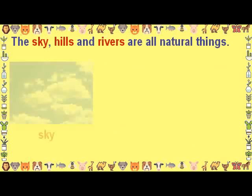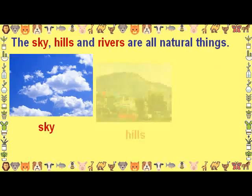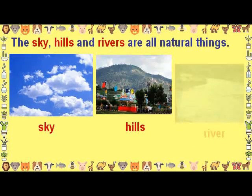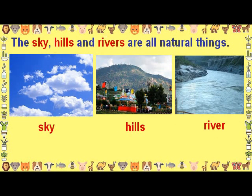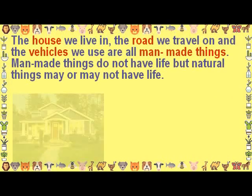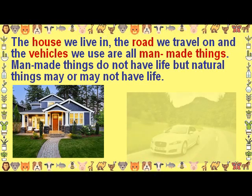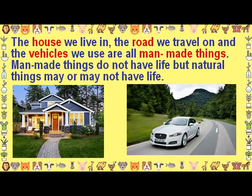The sky, hills and rivers are all natural things. The house we live in, the road we travel on, and the vehicles we use are all man-made things.